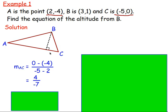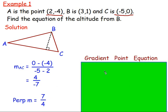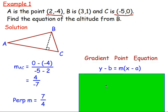So we know the gradient of AC. You then flip it upside down and change the sign to work out the perpendicular gradient. So the perpendicular gradient would be 7/4. After that, think gradient-point equation. The gradient is 7/4, the perpendicular gradient. The point - the only point we know is point B. We don't know this point down here, and definitely don't use A or C because they do not lie on that line.